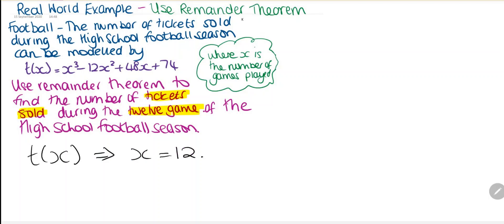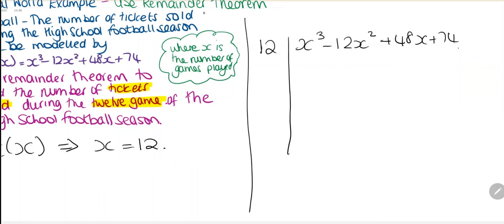So the first thing we need to do is divide the function by 12. We're going to divide this into x³ - 12x² + 48x + 74. We just need the coefficients: 1, -12, 48, and 74.